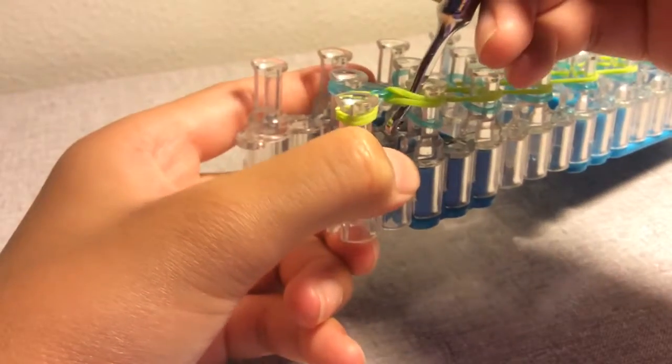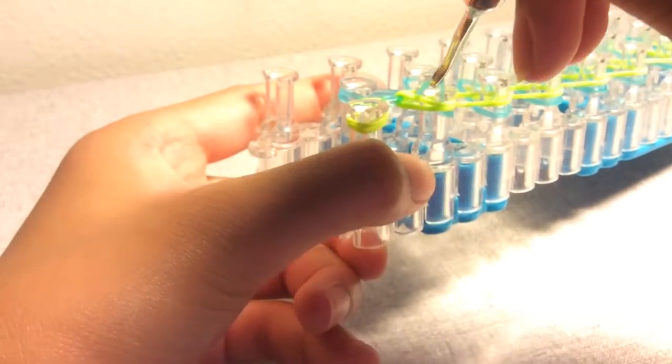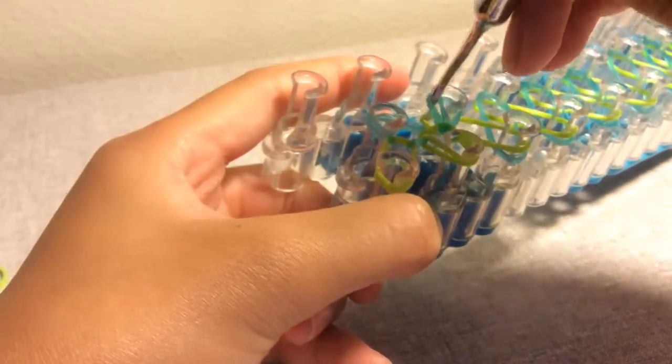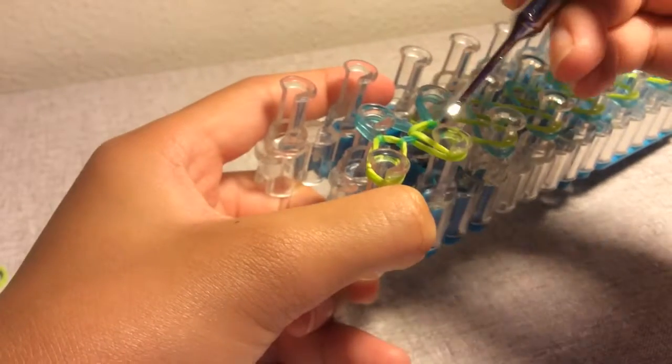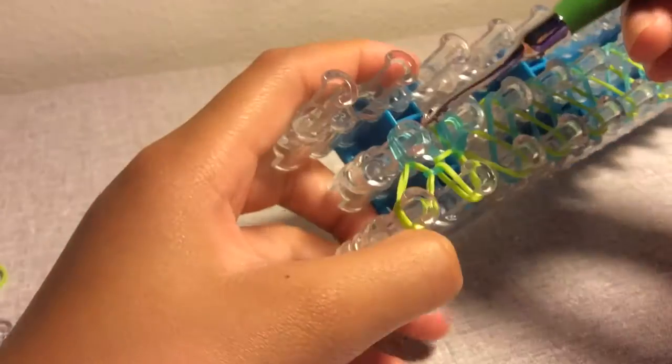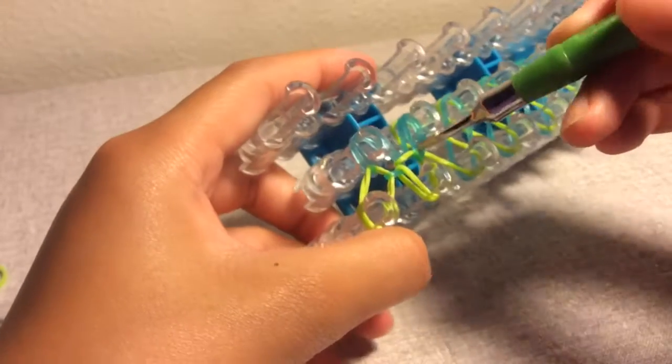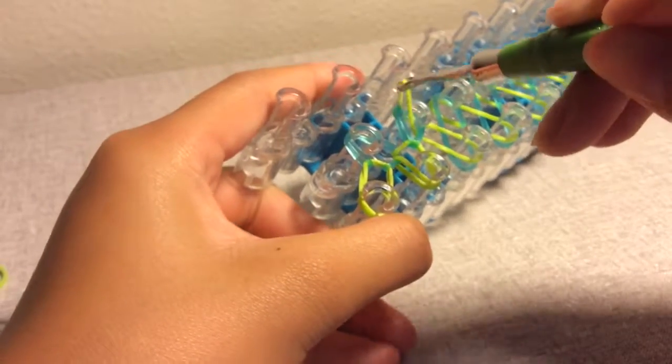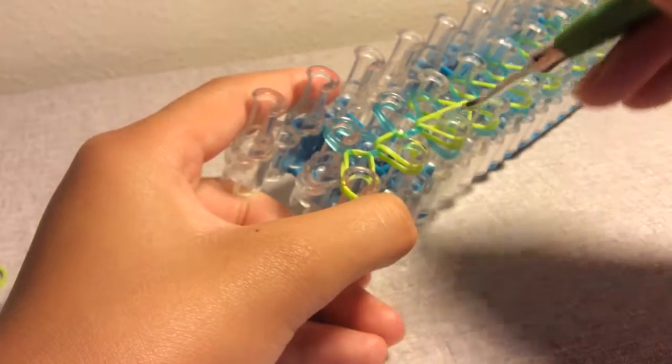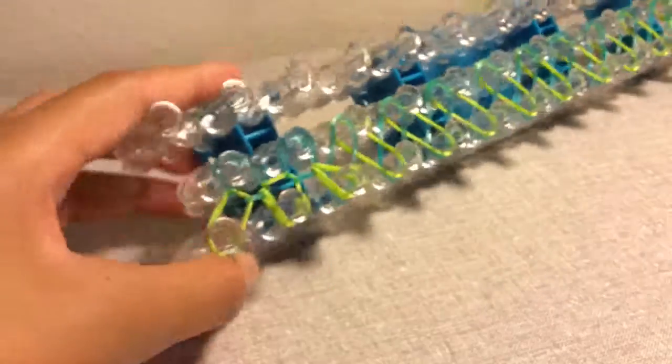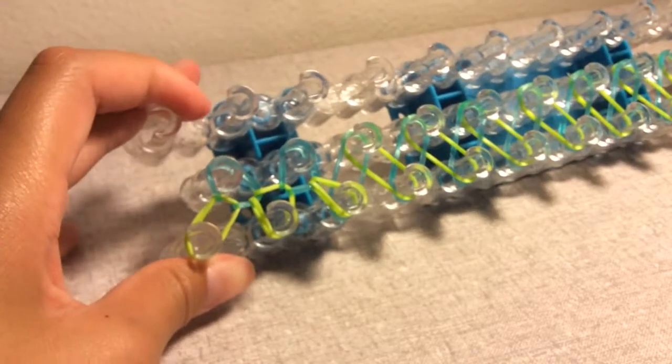Now again, you want to push back your green band and bring up the bottom band and loom that right here on this pin. One more time, you want to push back your blue band and bring up the bottom band and put it up here. So you want to continue this pattern all the way to the end of your loom.